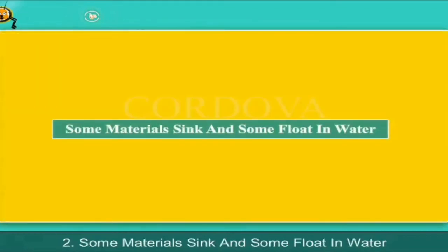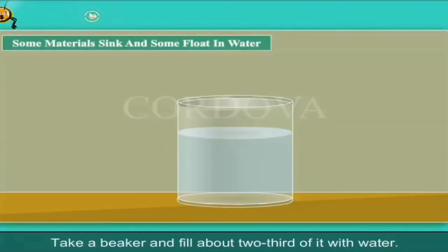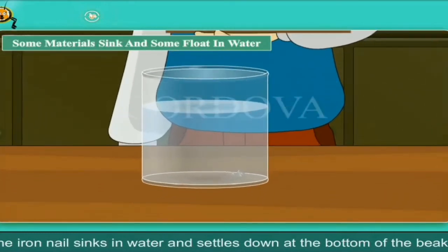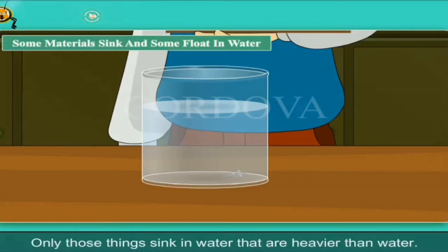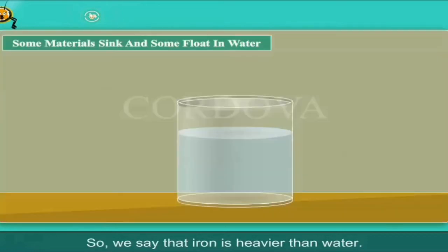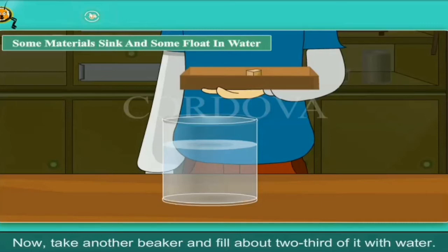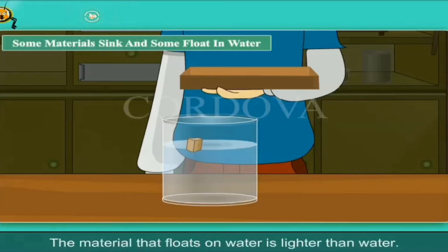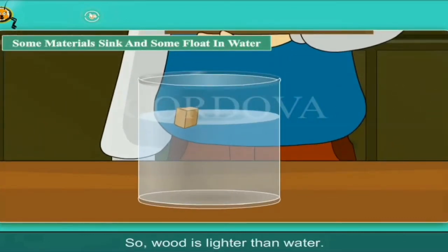Some materials sink and some float in water. Take a beaker and fill about two-thirds of it with water. Drop an iron nail in it. The iron nail sinks in water and settles down at the bottom of the beaker. Only those things sink in water that are heavier than water, so we say that iron is heavier than water. Now drop a small piece of wood in water. The piece of wood does not sink — the material that floats on water is lighter than water, so wood is lighter than water.